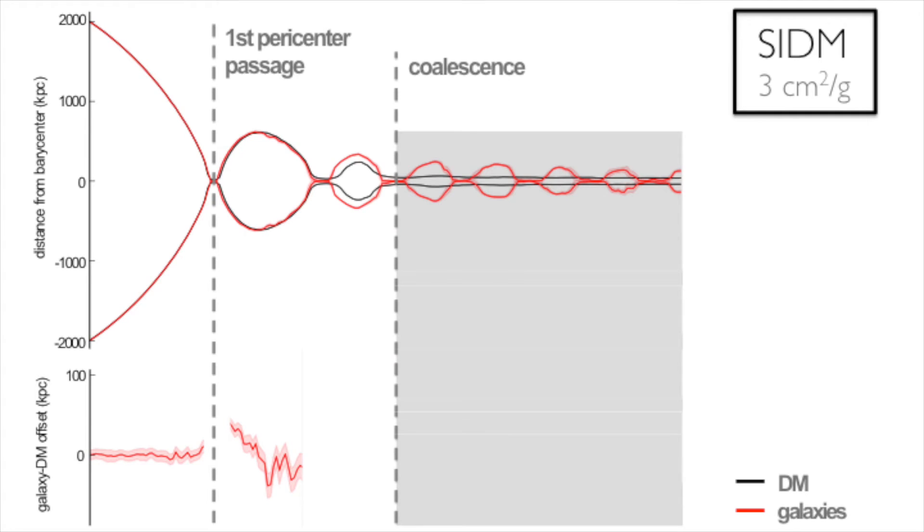Here, we've shown a prototypical trajectory of the dark matter and galaxy peaks on the top, and the offsets between them on the bottom, for a merger run with a cross-section of 3 cm² per gram. One can see that offsets are transient. They are typically largest just after pericenter and decreased shortly thereafter.